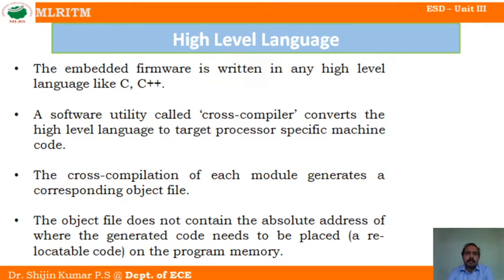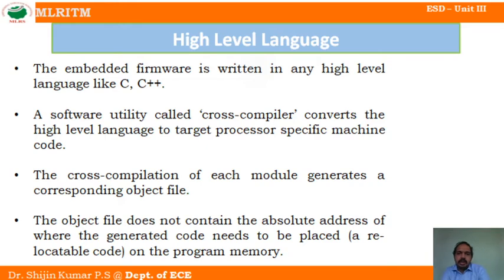For each and every processor there are different cross compilers. For example, if you take an 8086 processor, we are writing a program in C language. The concept and the programming will be the same, so we are writing a program using C language. Then we are converting that program to machine code using the cross compiler that is specific for that particular 8086 processor. The same program we can use for 8051 also, but we need another cross compiler that is specific for 8051. That is the concept — the software utility called cross compiler converts the high-level language to target-specific machine code.